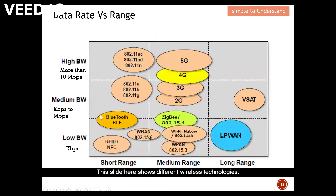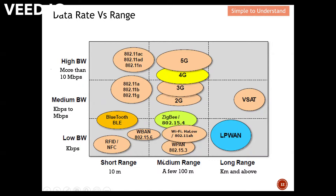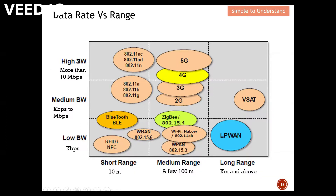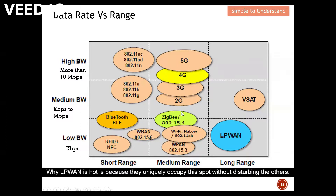This slide shows different wireless technologies. The x-axis shows the range from short to long range. The y-axis shows the bandwidth from low to high — low bandwidth means low data rate, high bandwidth means high data rate. The reason LPWAN is hot is because it uniquely occupies this spot on the chart without disturbing the others.